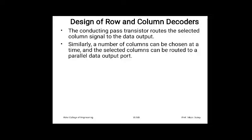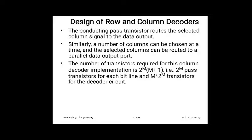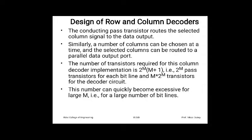A number of columns can also be selected simultaneously and routed to a parallel data output port. The total number of transistors required for this column decoder implementation is 2^M × (M + 1): that is 2^M pass transistors for each bit line plus M × 2^M transistors for the decoder circuit itself.